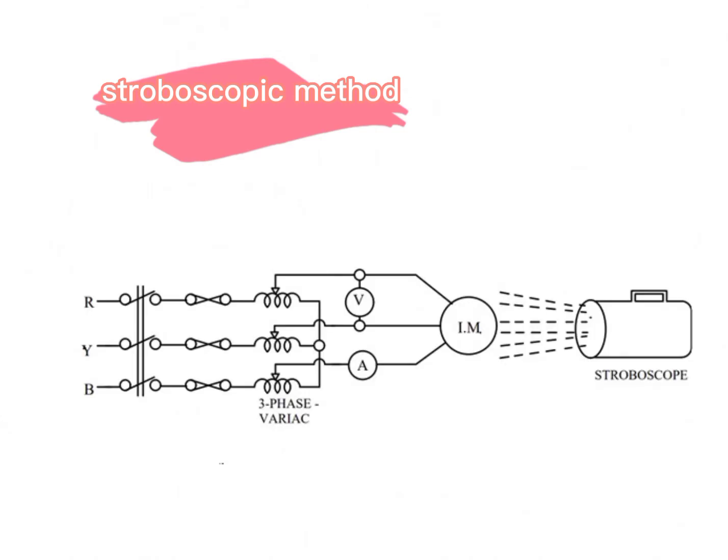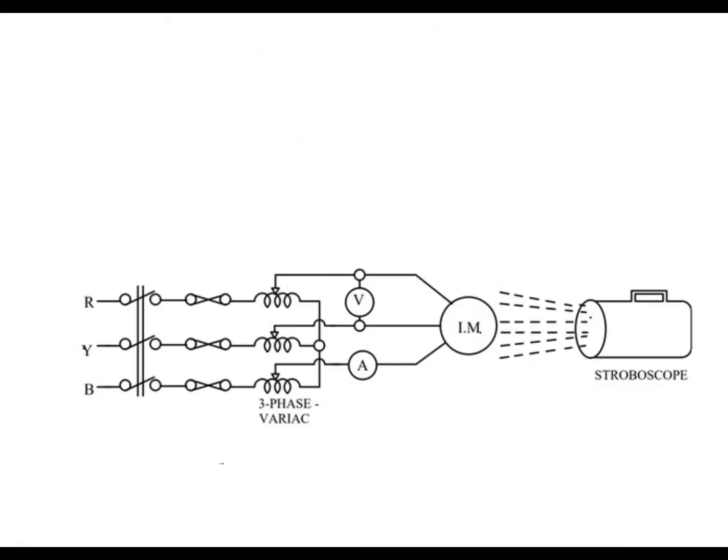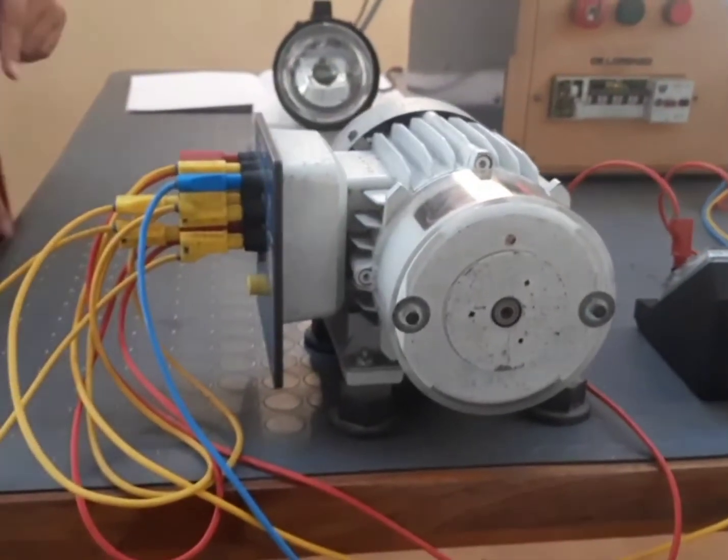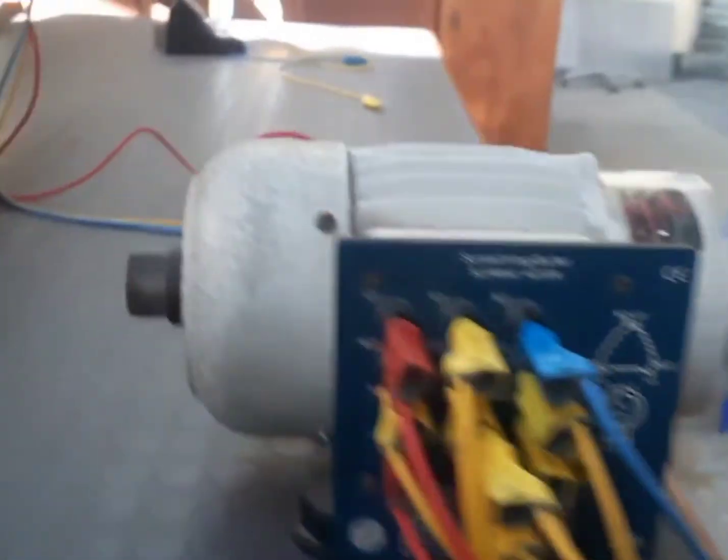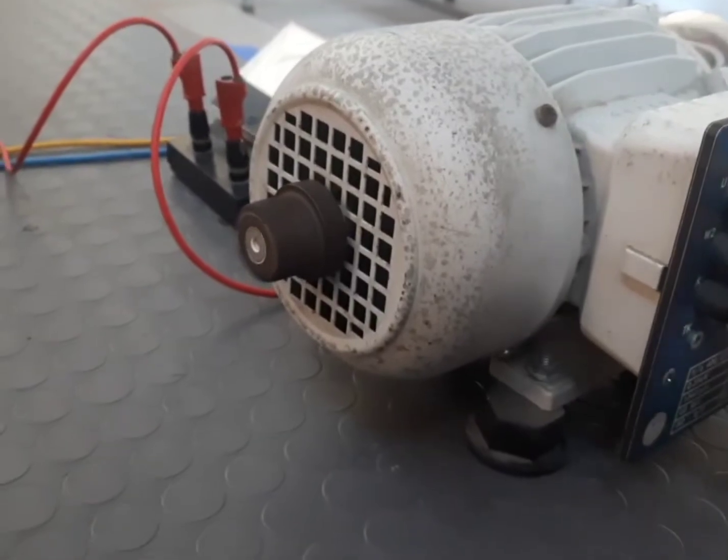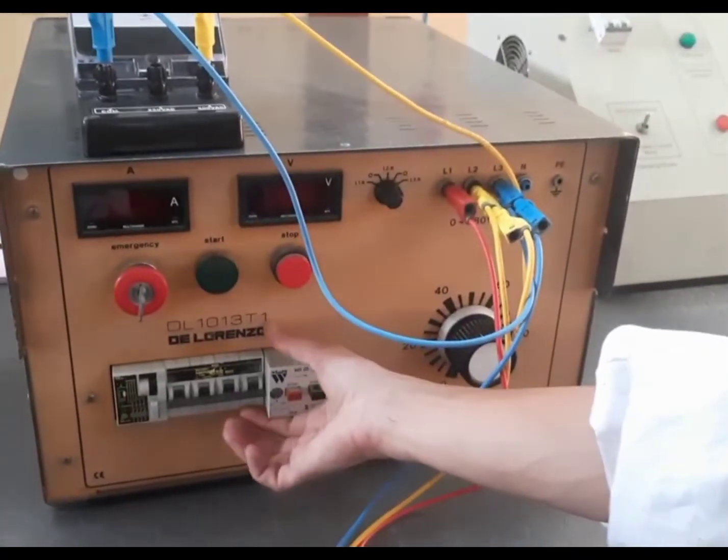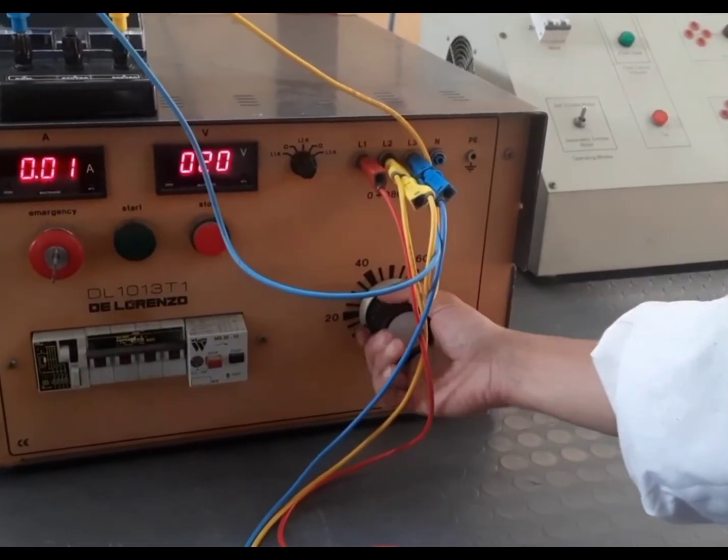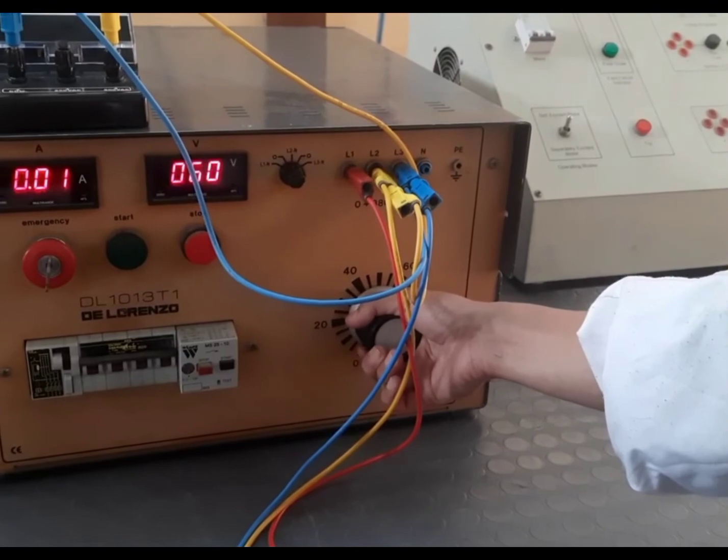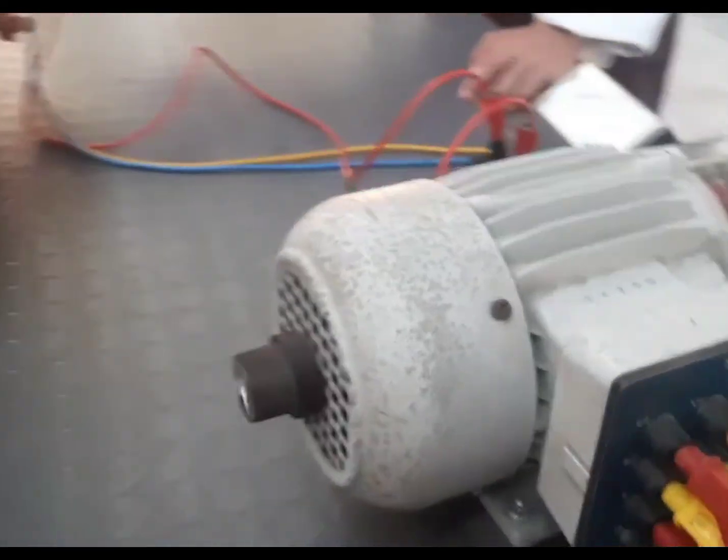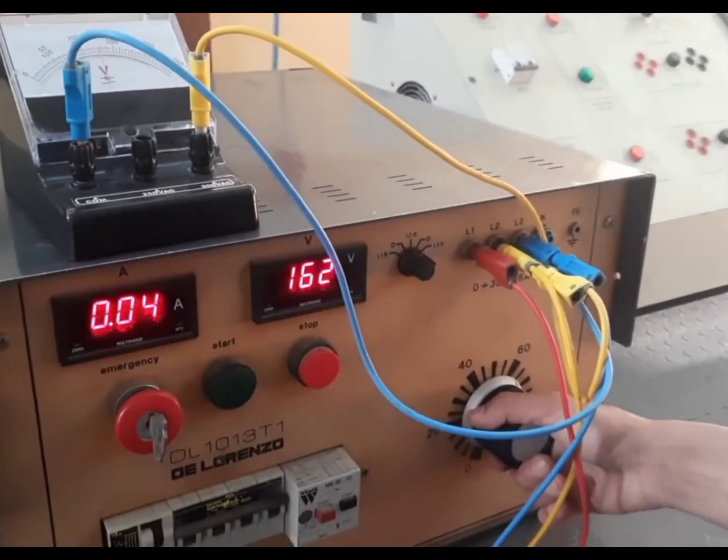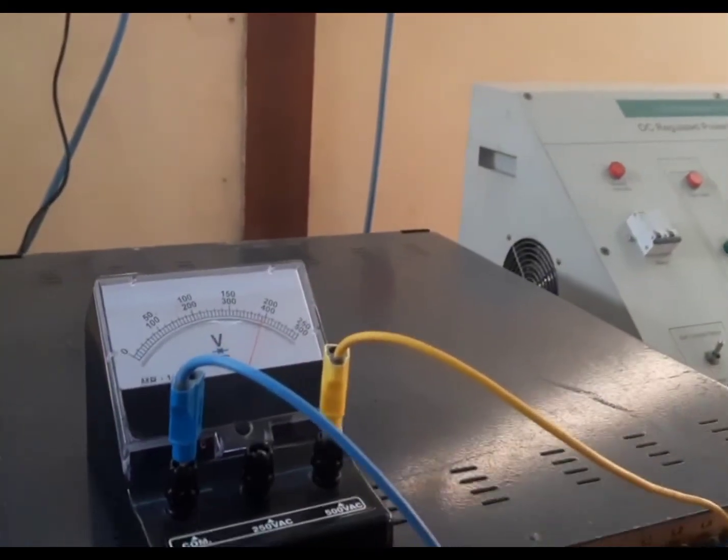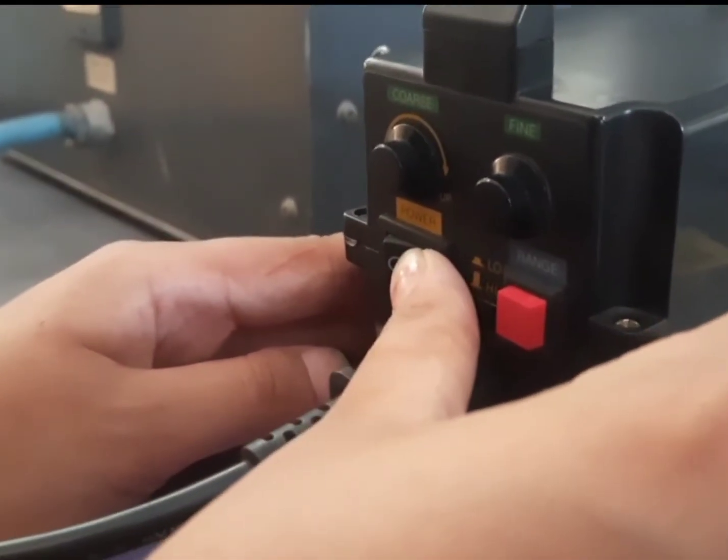The next method is the stroboscopic method. The connection of the induction motor for this method is the same as that of the actual speed method. However, in this one, we use a stroboscopic meter to measure the speed. Similar to the actual rotor speed method, we are giving the rated voltage to the induction motor.